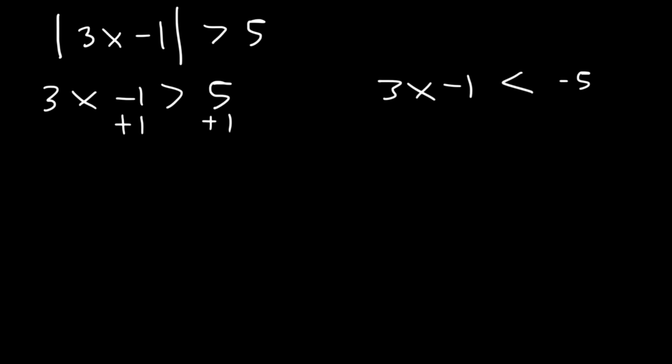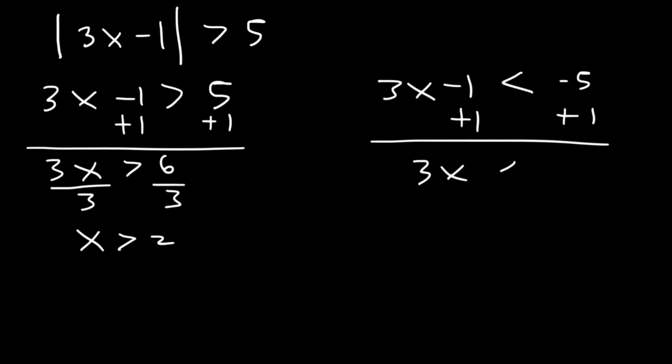And then after that just solve it. 5 plus 1 is 6 and then let's divide by 3. So x is greater than 2. Now for the other one, negative 5 plus 1 is negative 4. And if we divide it by 3 we're gonna get a fraction. X is less than negative 4 thirds.